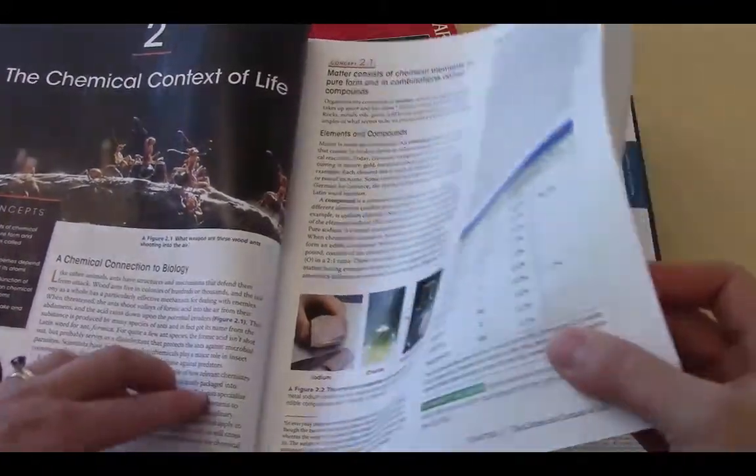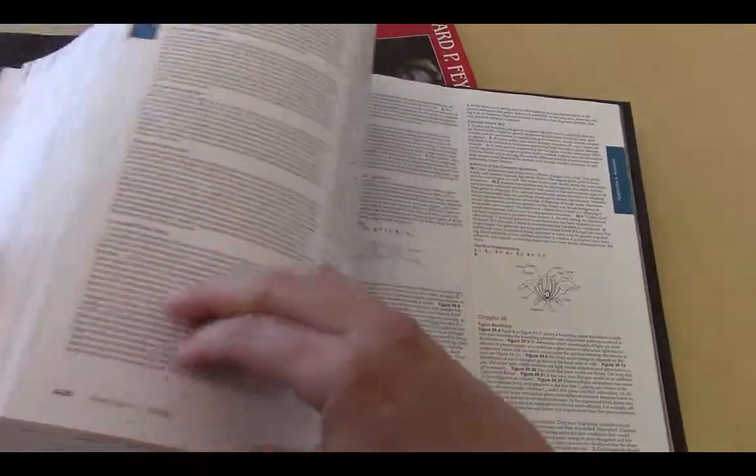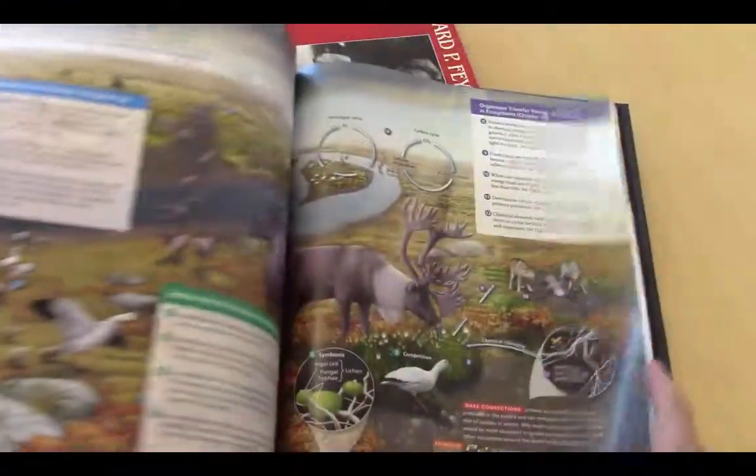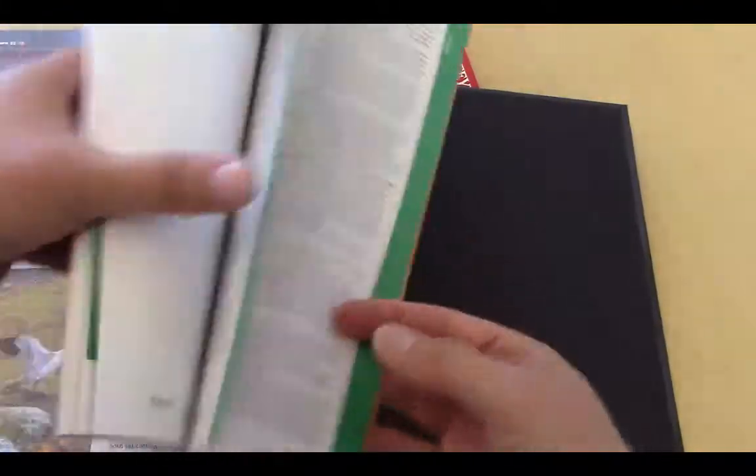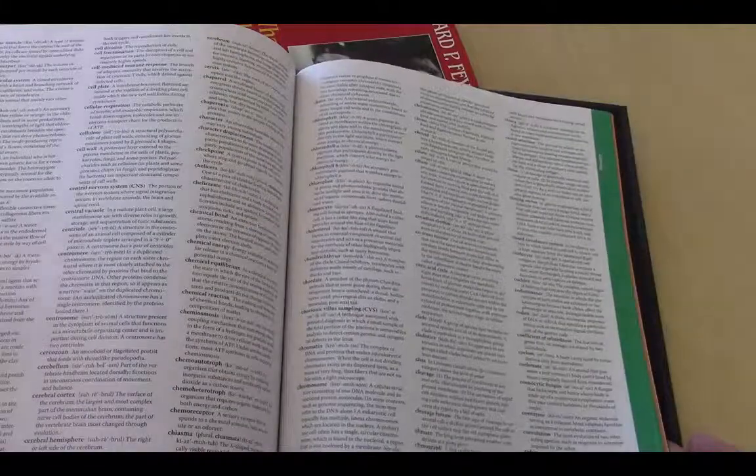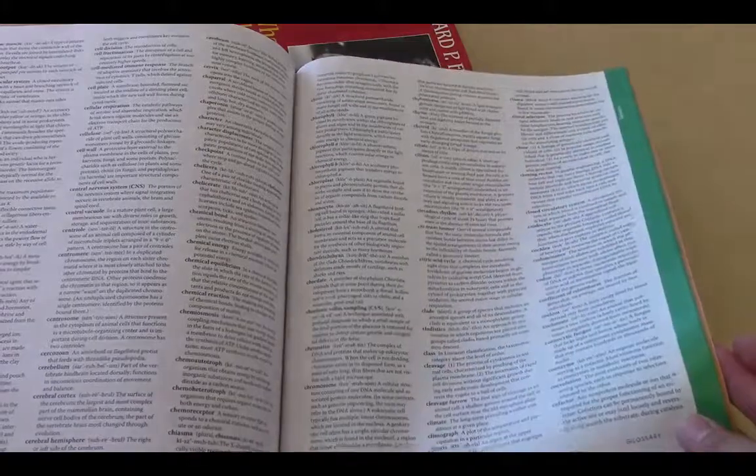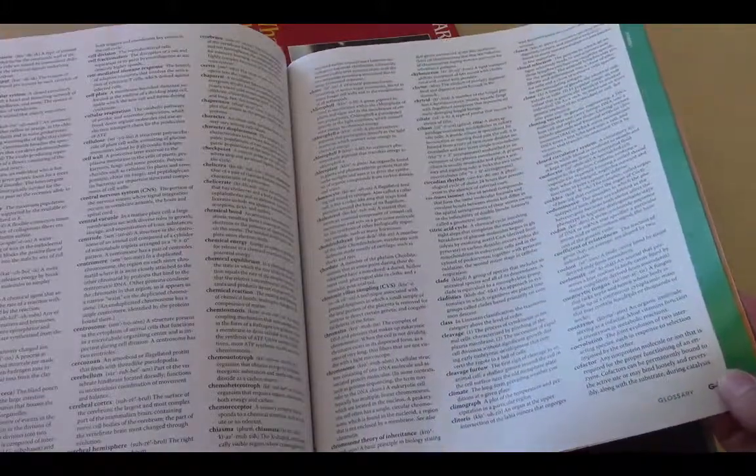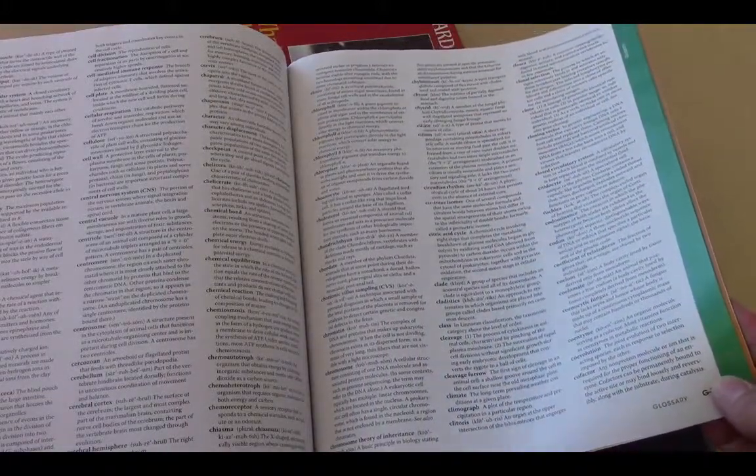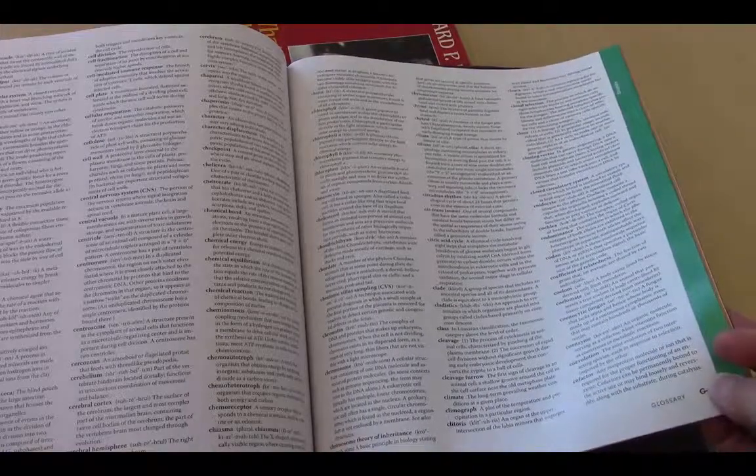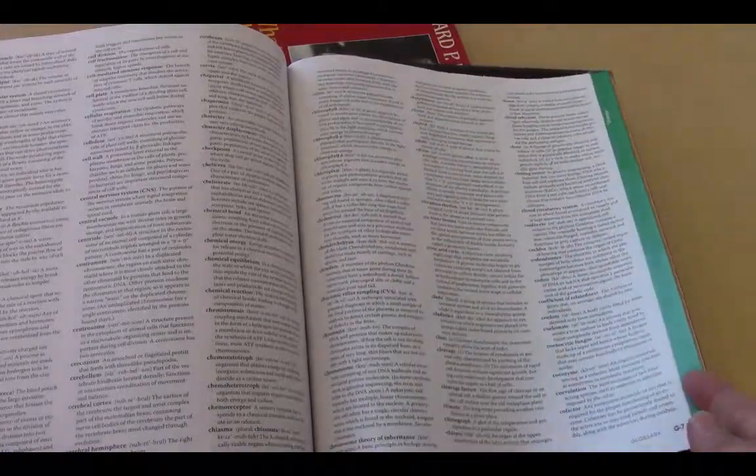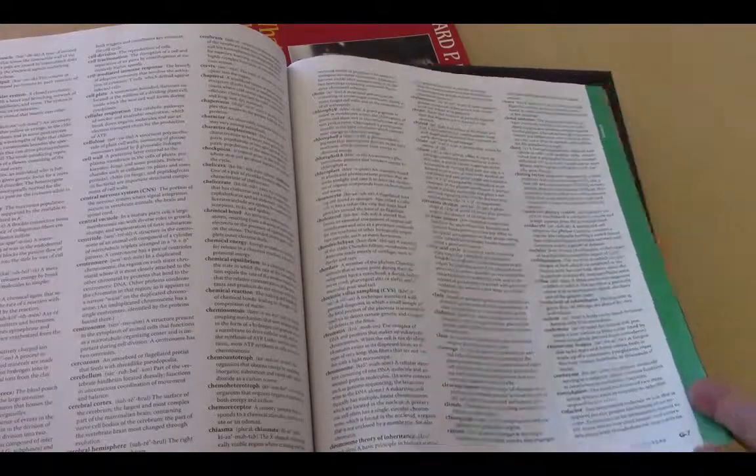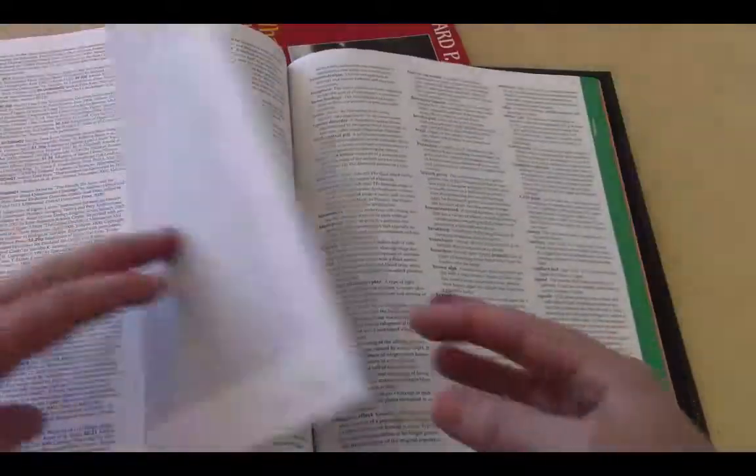So I did want to point out a valuable resource. At the end of your textbook, way back here, there is a glossary. So these green-edged pages are glossary. They contain all of the bold printed words that are found in each chapter. And it's a great place to go if you're not sure what something means. Or if you're reading something on mastering biology online in your homework and you don't know that word, go to the back of your textbook and check that out.